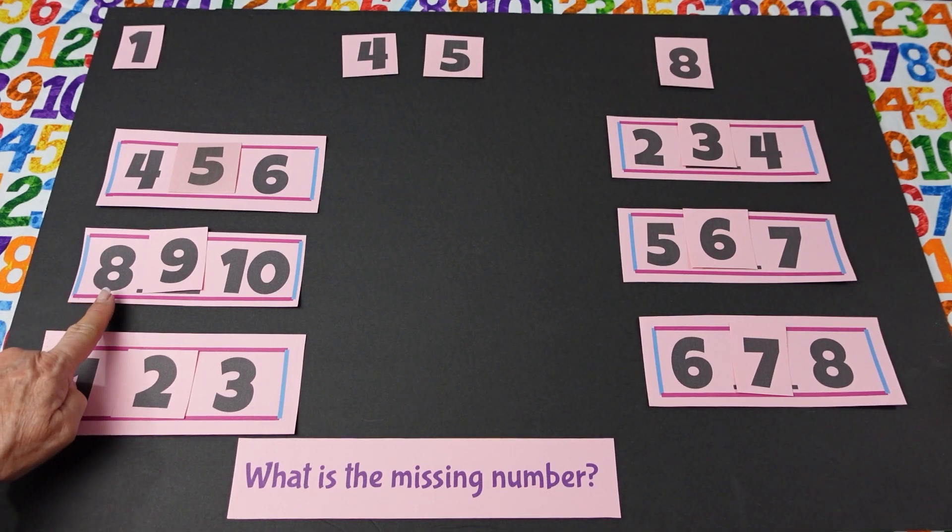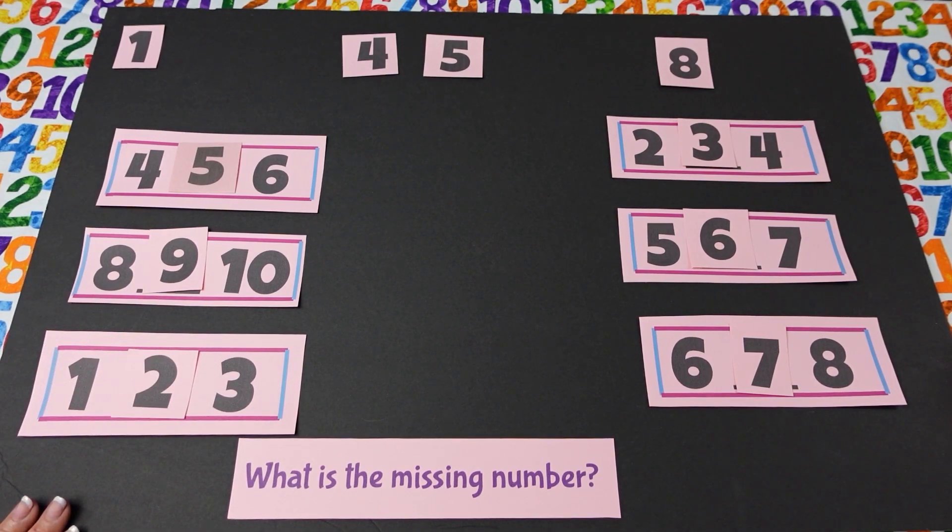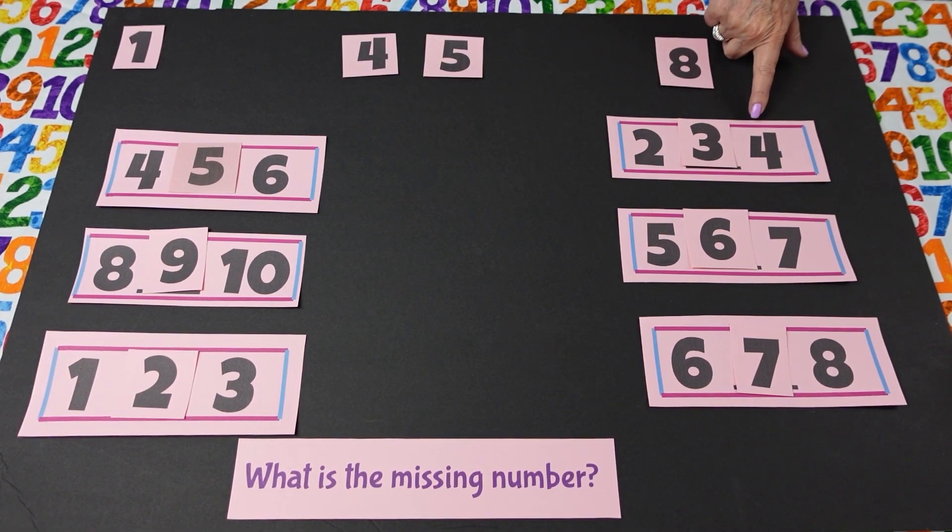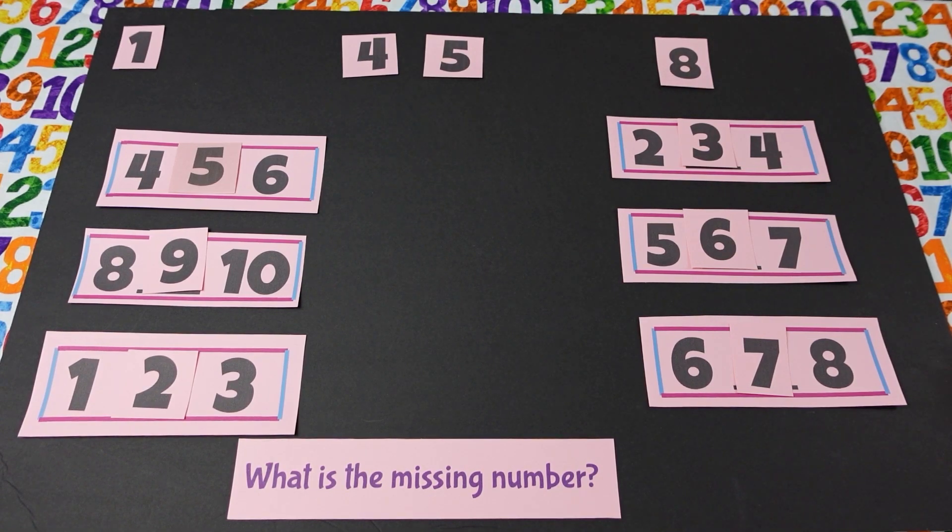And Jonathan, what's this one? Eight, nine, ten. Perfect. Isabella, this last one, what is that? Two, three, four. Good. All right.